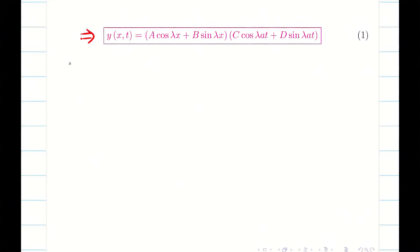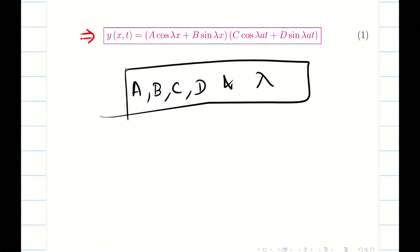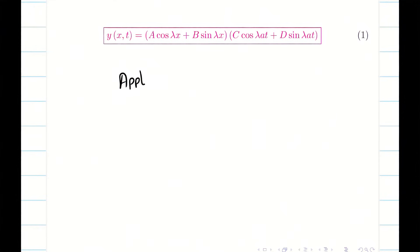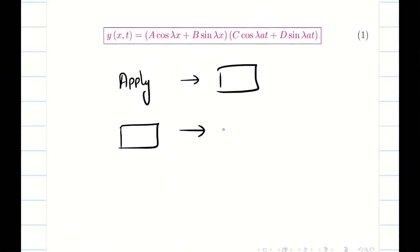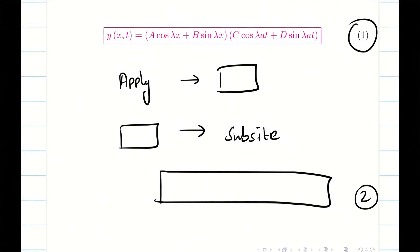Now we have to start solving. Our aim is to find the 5 unknown constants A, B, C, D, and λ from equation 1 using the 2 boundary conditions and 2 initial conditions, one at a time. Each time we apply a condition we get one piece of data, then substitute that data into the nearest equation to produce the next numbered equation.